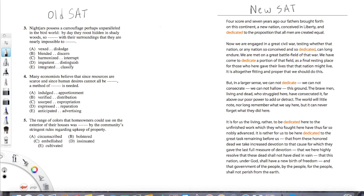On the left hand side we have the traditional style where we have blanks that we fill in with vocabulary words. We have two blanks on questions three and four, one on five. So you'll have both of these on the old SAT. Let's look at number five. It says the range of colors that homeowners could use on the exterior of their homes was blank by the community's stringent rules regarding the upkeep of property.